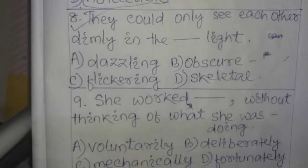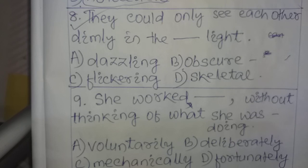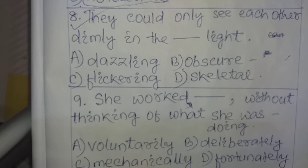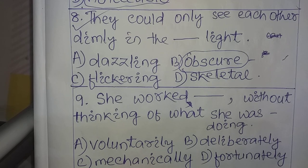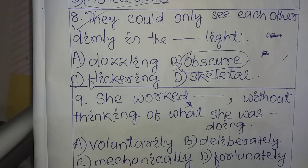Question number eight: 'They could only see each other dimly in the ___ light.' The correct answer is 'obscure'. Obscure means not clear — obscure light makes the vision dim. So the sentence is: 'They could only see each other dimly in the obscure light.'